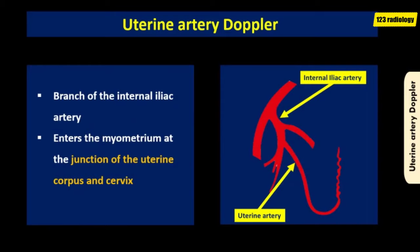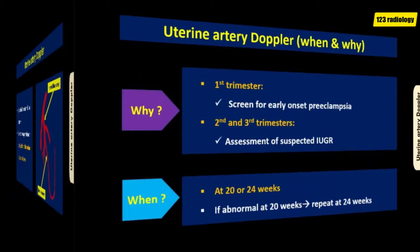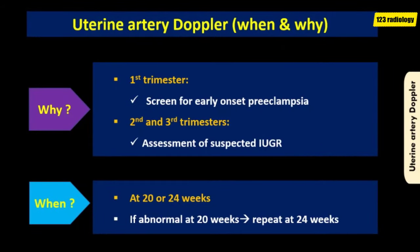The maternal side of the fetoplacental circulation is represented by the uterine artery, which is a branch of the internal iliac artery. It enters the myometrium at the junction between the uterine corpus and the cervix. Doppler ultrasound of the uterine artery is used in the first trimester to screen for early-onset preeclampsia, and in the second and third trimesters to evaluate suspected intrauterine growth restriction. This screening test is typically done at 20 weeks of gestation, and if abnormal, repeated at 24 weeks.